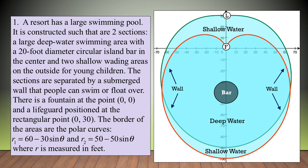Problem 1 is based upon this situation. A resort has a large swimming pool constructed with two sections: a large deep water swimming area with a 20-foot diameter circular island bar in the center, and two shallow waiting areas on the outside for young children. The sections are separated by a submerged wall that people can swim or float over. There is a fountain at the point (0,0) and a lifeguard positioned at the rectangular point (0,30). The border of the areas are the polar curves R1 = 60 − 30 sin θ and R2 = 50 − 50 sin θ, where R is measured in feet.